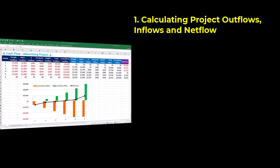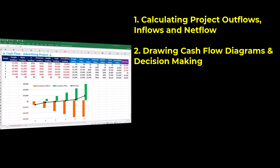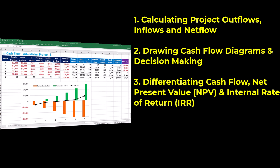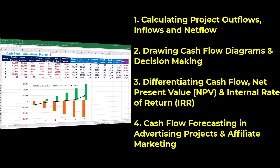The four steps are: calculating project outflows, inflows, and net flows; drawing cash flow diagrams and decision making; differentiating cash flow, net present value or NPV, and internal rate of return or IRR; and cash flow forecasting in advertising projects and affiliate marketing.